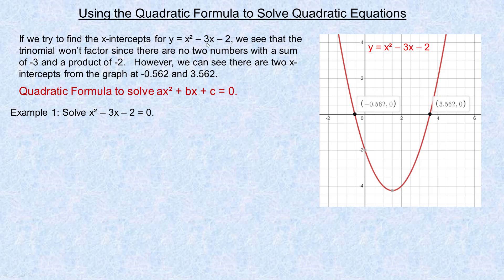You can't factor that because there are no integers that add to negative 3 and multiply to negative 2 — they don't exist. But if you look at the graph, there obviously are some x-intercepts. There's one at negative 0.562 and another one at 3.562. So there are x-intercepts; we just can't find them by factoring.